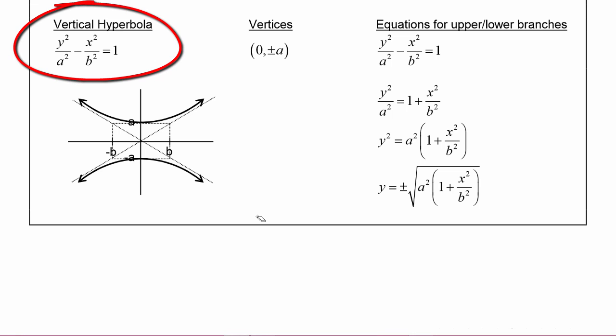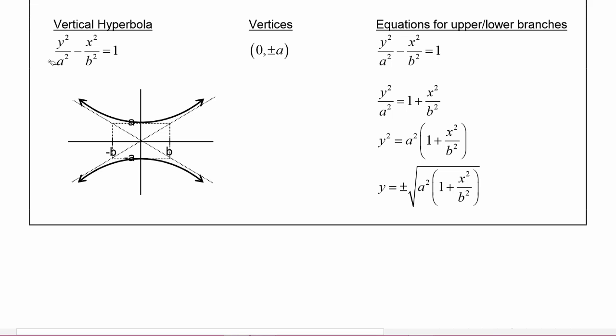Next, let's review the vertical hyperbola, whose standard equation is y² over a² minus x² over b² equals one. Because both y and x are squared and there is a minus sign, you know it's a hyperbola. Because the y² term comes first, you know it is a vertical hyperbola. The vertices are at (0, ±a), so one vertex is at (0, a) and the other is at (0, −a).